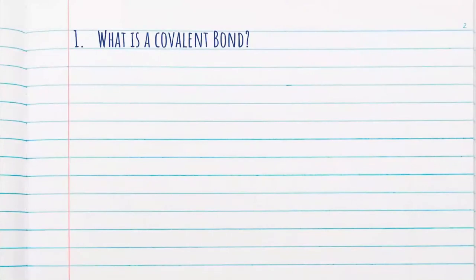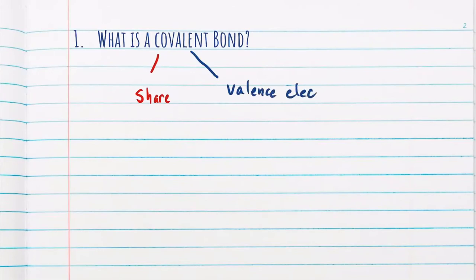Our first question asks us to define what a covalent bond is. Breaking down what the word covalent means: 'co' just means to share, and the 'valent' portion is talking about the valence electrons, or the electrons in the outermost shell. Putting those two words together, a covalent bond is when atoms share their electrons.